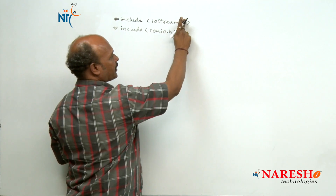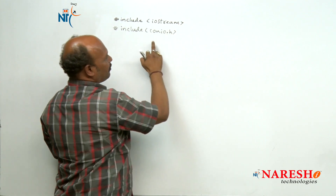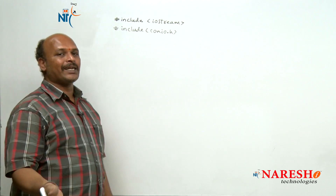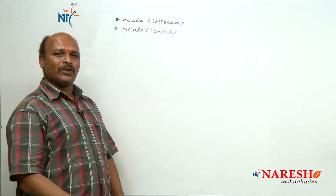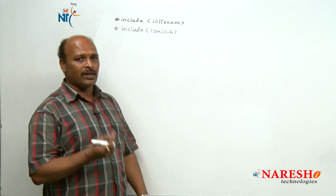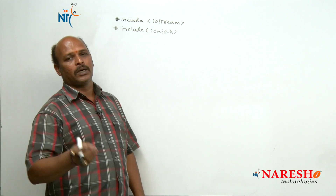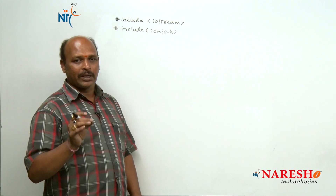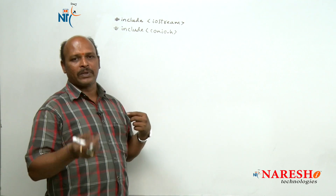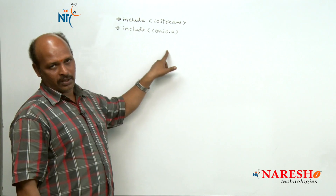So remove the .h — use only iostream. The conio.h belongs to C header files. In Dev C++, conio.h is not compulsory because to clear the screen or pause execution we use functions like getch or clrscr, but in Dev C++ these are not required, so conio.h is optional.